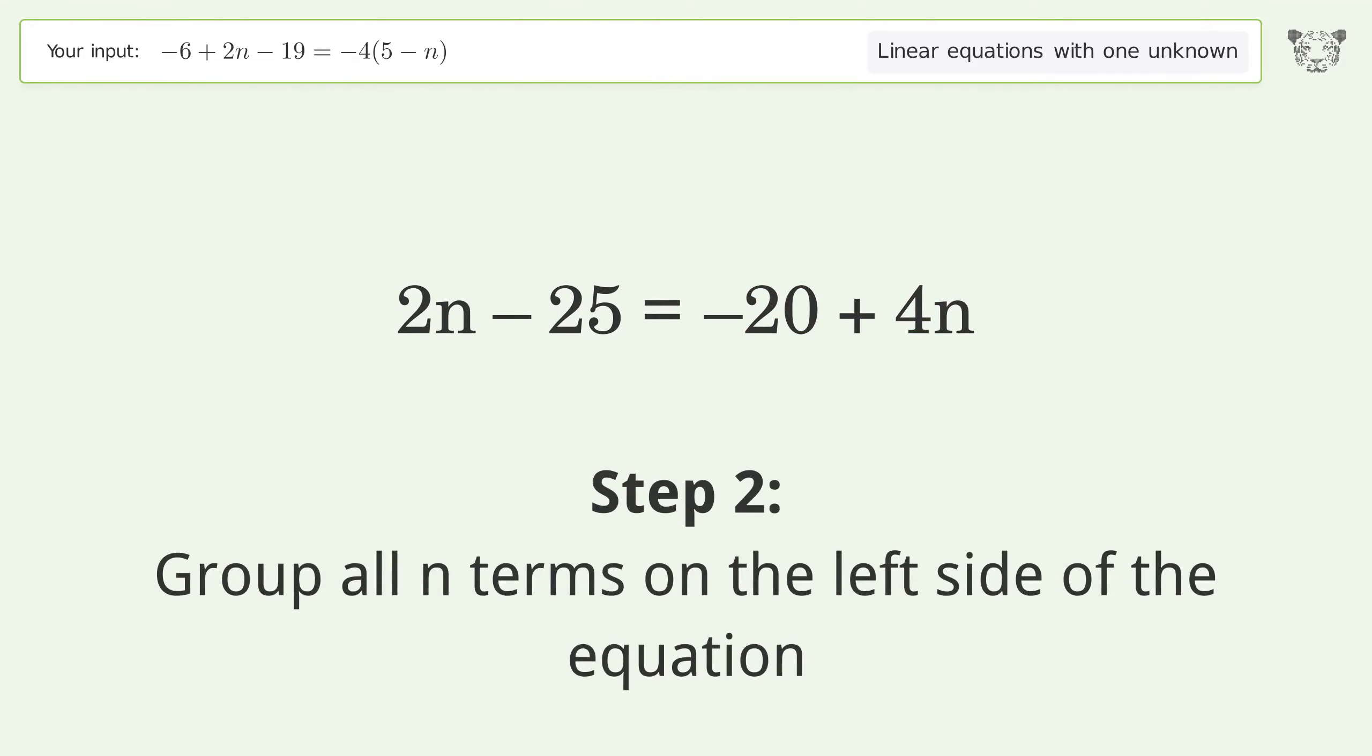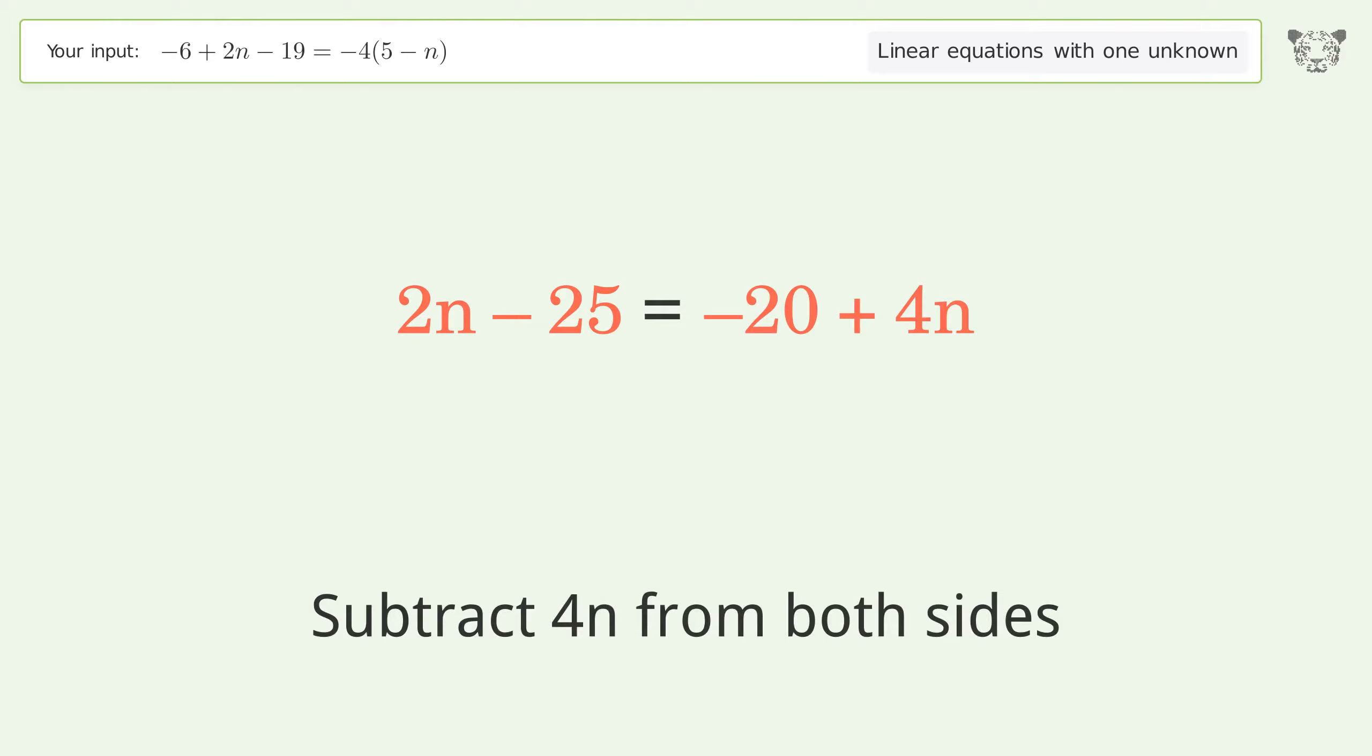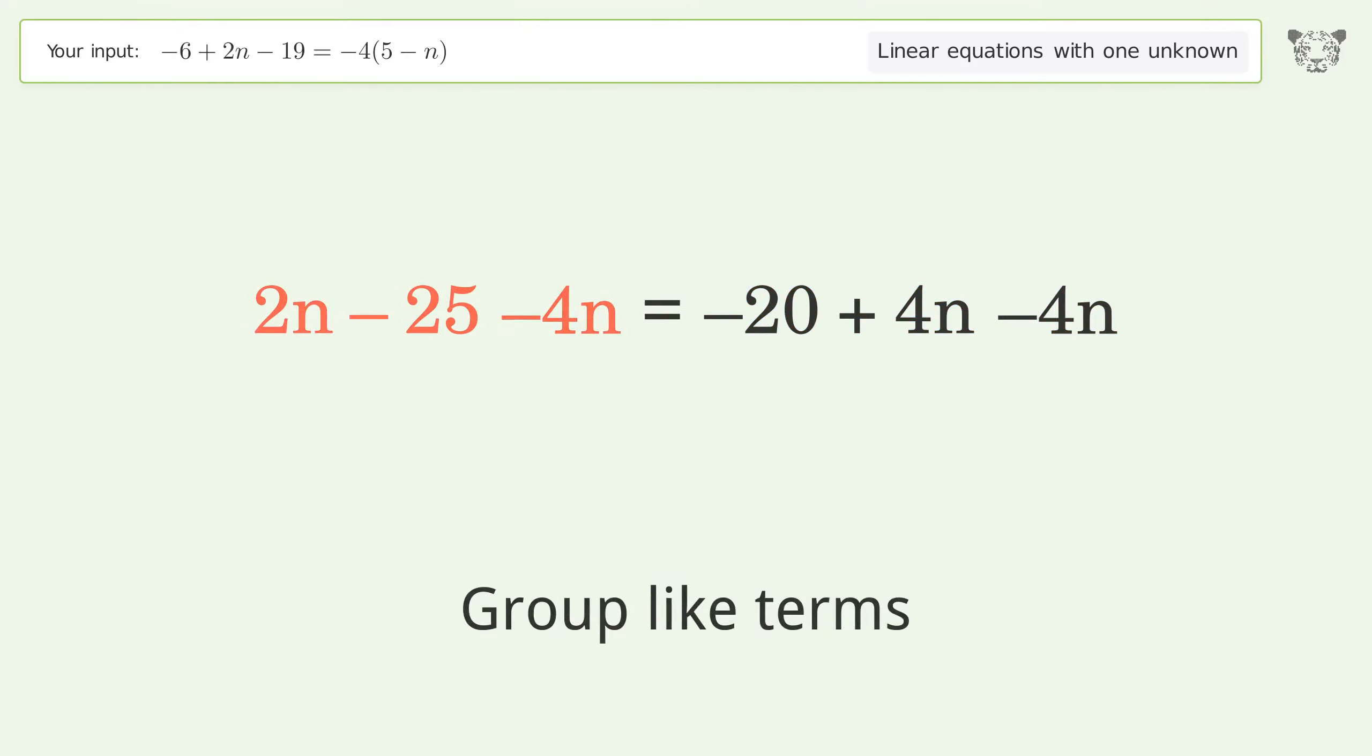Group all n terms on the left side of the equation. Subtract 4n from both sides. Group like terms. Simplify the arithmetic.